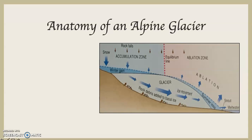Just like you have an anatomy — your skeletal system, your circulatory system, muscular system, and all the rest of that — so too an alpine glacier has an anatomy. Not every single alpine glacier is going to have every one of these characteristics, but every alpine glacier will have at least some of these characteristics.